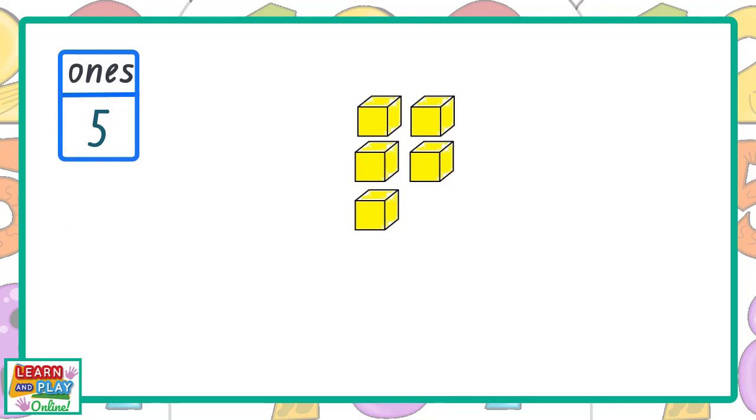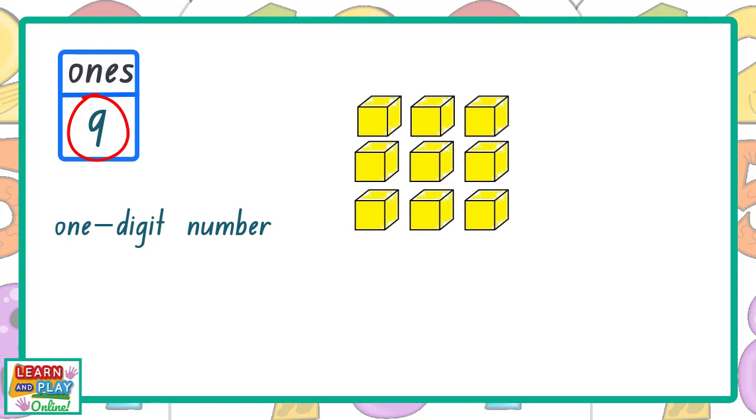Let's continue counting the ones as they appear. Six, seven, eight, nine. The number nine is still a one-digit number because there is only one digit. But look what happens when we add another ones block to the group. We now have 10 ones. The number 10 is a two-digit number as it is made up of two digits: one and zero.